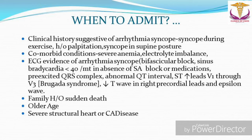A patient with syncope should be admitted when there is a clinical history suggestive of arrhythmic syncope: syncope during exercise, history of palpitation, or syncope in the supine posture; comorbid conditions like severe anemia or electrolyte imbalance. When there is ECG evidence of arrhythmic syncope — for example: bifascicular block, sinus bradycardia less than 40 per minute in absence of SA block or medications, pre-excited QRS complex, abnormal QT interval, ST elevation in leads V1 through V3 (Brugada syndrome), or negative T waves in right precordial leads with epsilon wave.